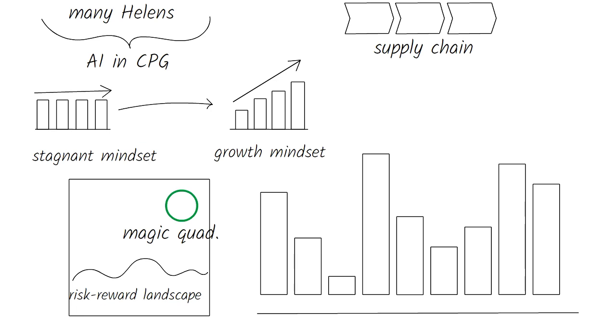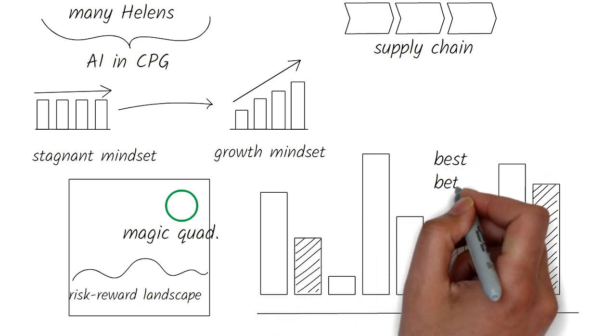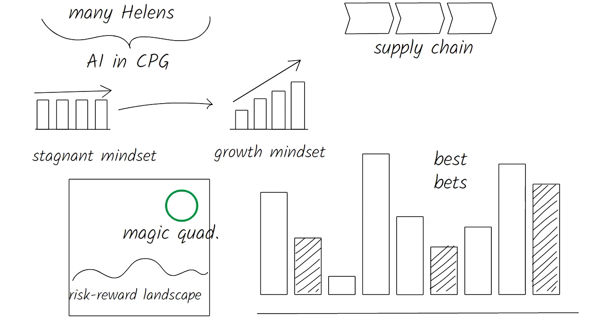How do we identify, achieve, and demonstrate good ROI on these AI investments? Where do we place our bets first? How can we build something small, show value, and then scale? What are the smart AI investments that we can investigate right now?